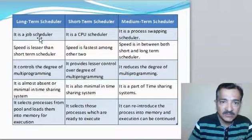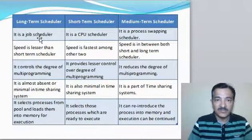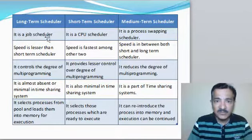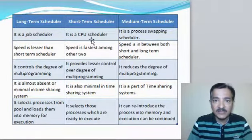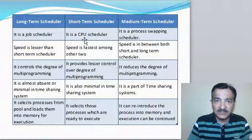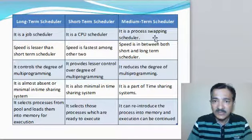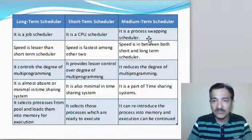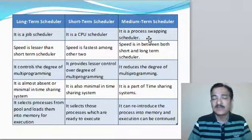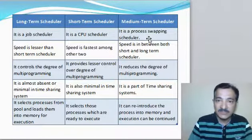The long term scheduler is a job scheduler. Whenever a new job is created, scheduling it to the ready queue or the ready suspended queue is done by the long term scheduler. The short term scheduler is a CPU scheduler — giving the process from the ready queue to the CPU is done by the short term scheduler. The medium term scheduler is basically a swapper — swapping the process from main memory to secondary memory and from secondary memory back to main memory.